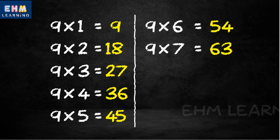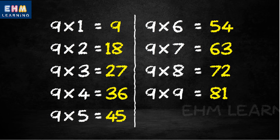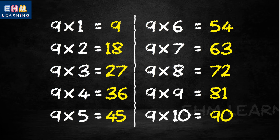9 7s are 63, 9 8s are 72, 9 9s are 81, 9 10s are 90.